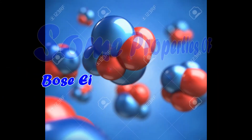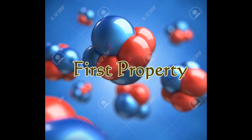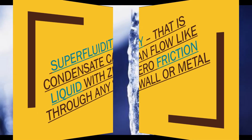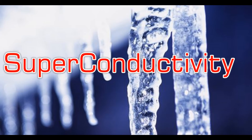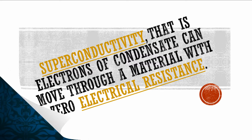Some properties of Bose-Einstein condensate. First property: Superfluidity — condensate can flow like a liquid with zero friction through any wall or metal. Second property: Superconductivity — electrons of the condensate can move through a material with zero electrical resistance.